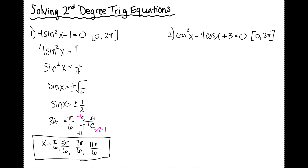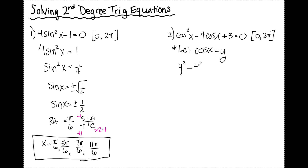Number two. This is different from number one — it has cosines instead of sines, but I also notice that my variable appears twice: once where cosine is being squared and once where cosine is left alone. A lot of times the easiest way to handle these is to let cosine x equal a different variable, say y.